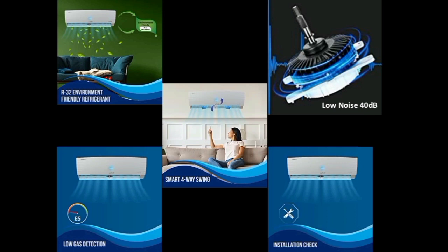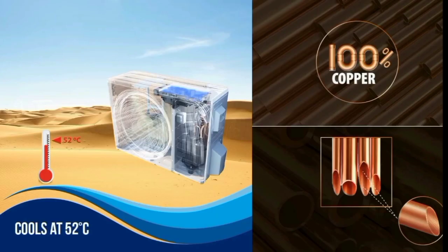Let's check the installation. This AC operates up to 52 degrees Celsius. It also features a copper condenser coil. Copper is a low-maintenance material that helps the AC cool the room faster and provides a longer lifetime for the condenser.